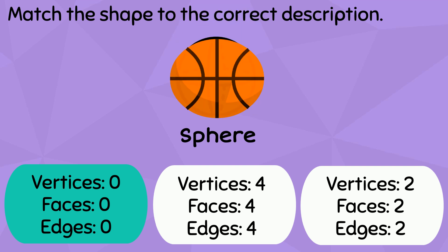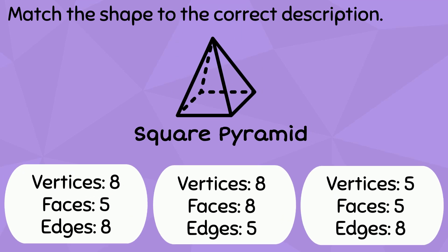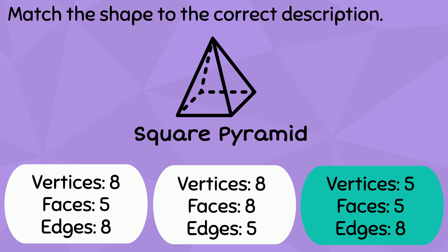A square pyramid has five vertices, five faces, and eight edges. The reason why it's called a square pyramid is because the bottom part, called the base, is a square.